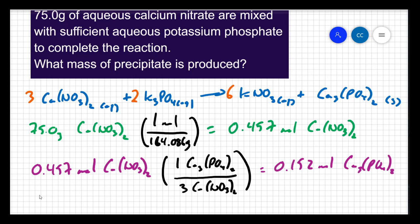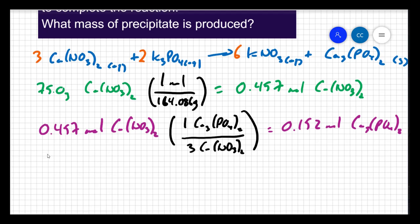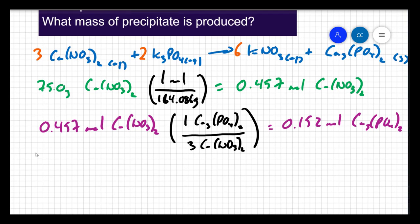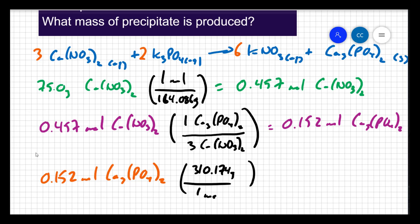So now we know the moles of precipitate that will form. To finish this up, we simply need to find the mass of the precipitate. So I will take my 0.152 moles of the calcium phosphate and multiply it by the molar mass of calcium phosphate. The molar mass is 310.174 grams for every one mole, which tells me that I make 47.1 grams of my precipitate.